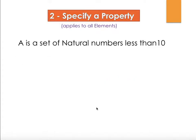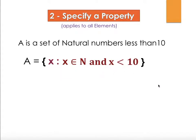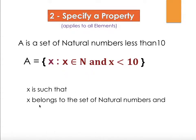Now if you want to write a set of natural numbers less than 10, how do we do that using properties? We start with the set name, then in curly brackets we have a variable x such that x belongs to N and x is less than 10. We read this as: x is such that x belongs to N, the set of natural numbers, and x is less than 10. That's how you read a specific property of a set.